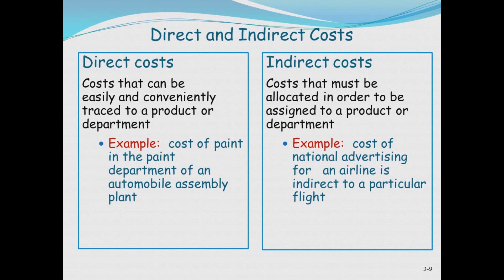An indirect cost is a cost that must be allocated in some fashion to a product. For example, the cost of advertising for Southwest can't be directly associated with a particular flight, so it has to be allocated across flights in order to understand which routes are profitable or not. That cost of advertising has to be allocated.